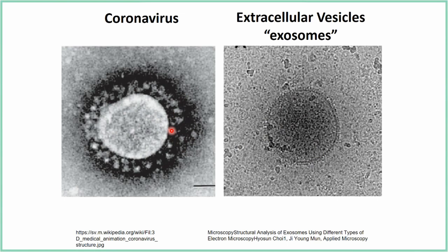The spike proteins are sticking out from the actual virion — from that membrane — and they're very prominent. They're like big antennas on the surface. We don't see anything like that on the exosome on the right. The virus might evolve the shape or presentation of these proteins to make itself more or less infectious.